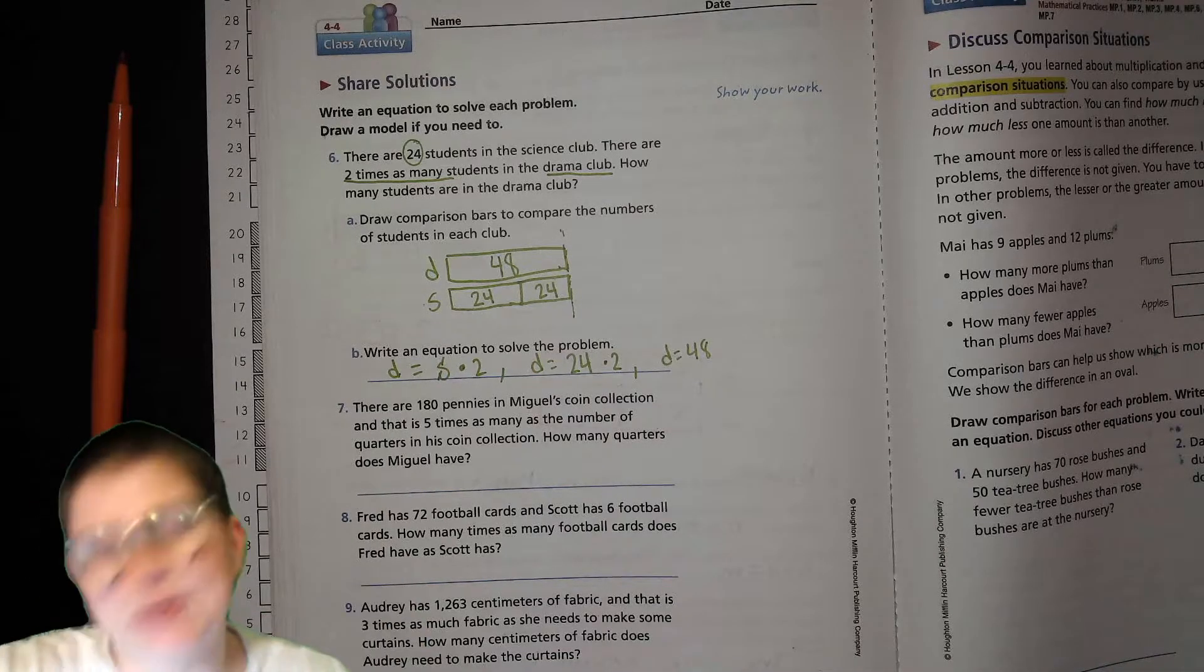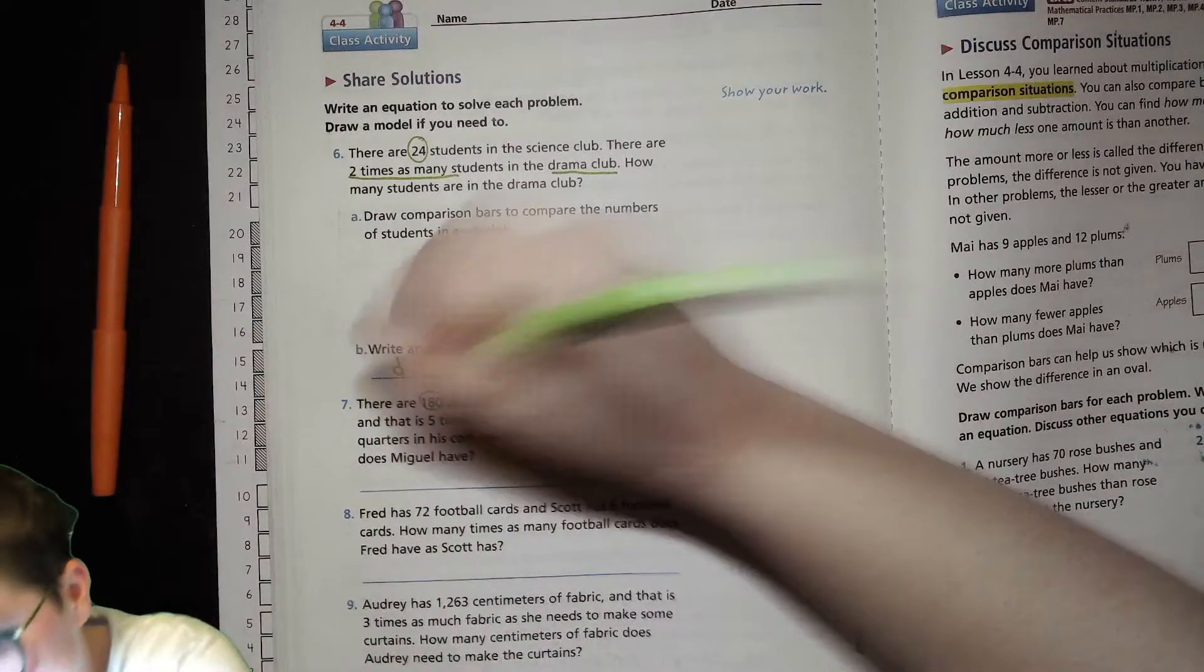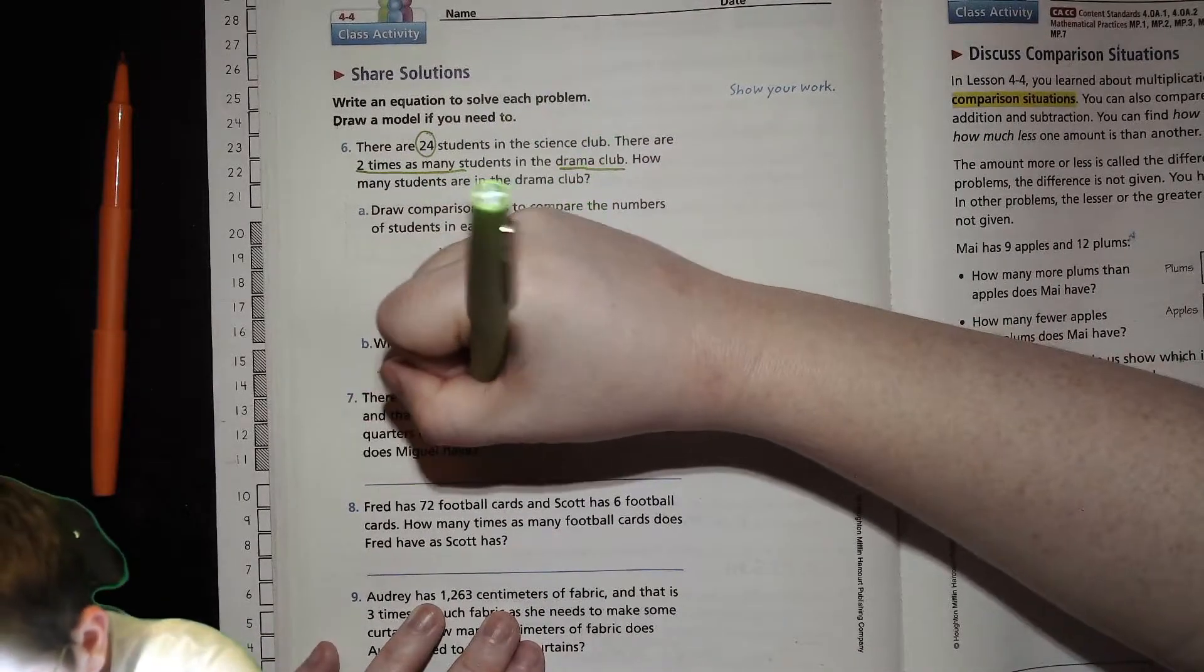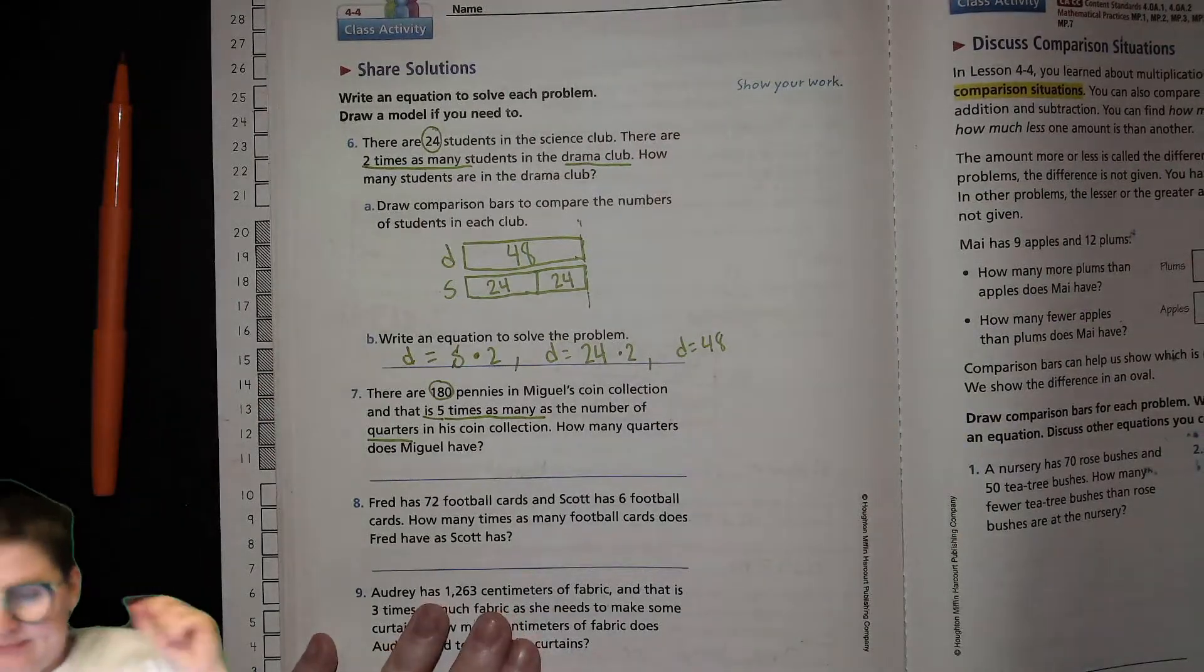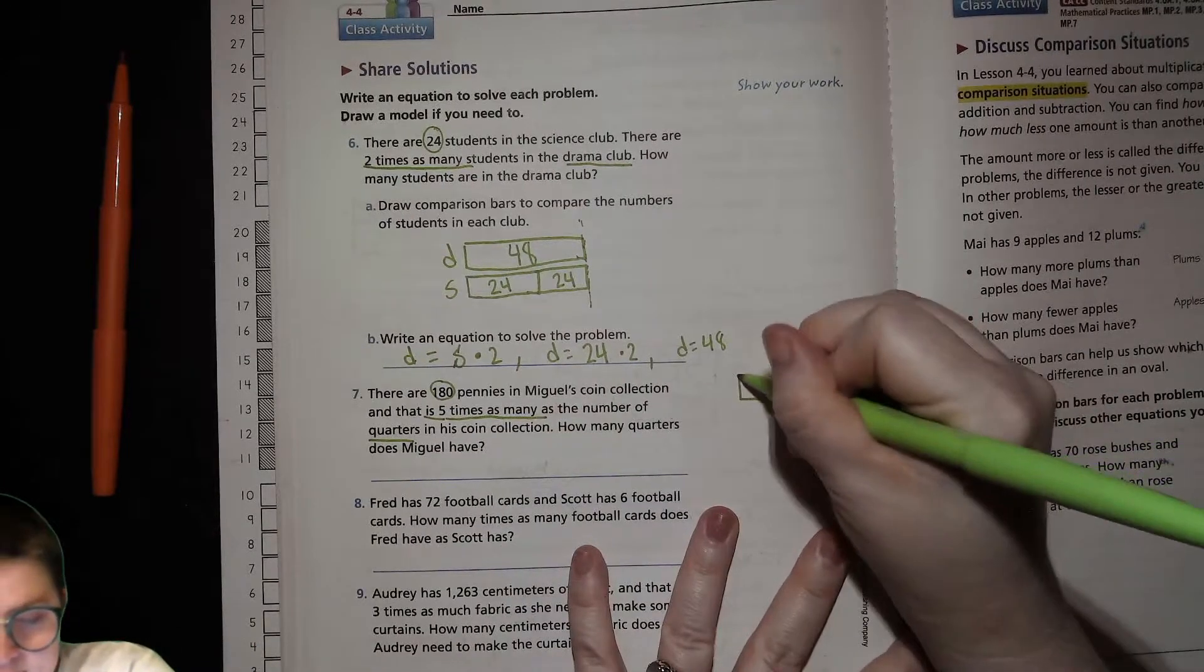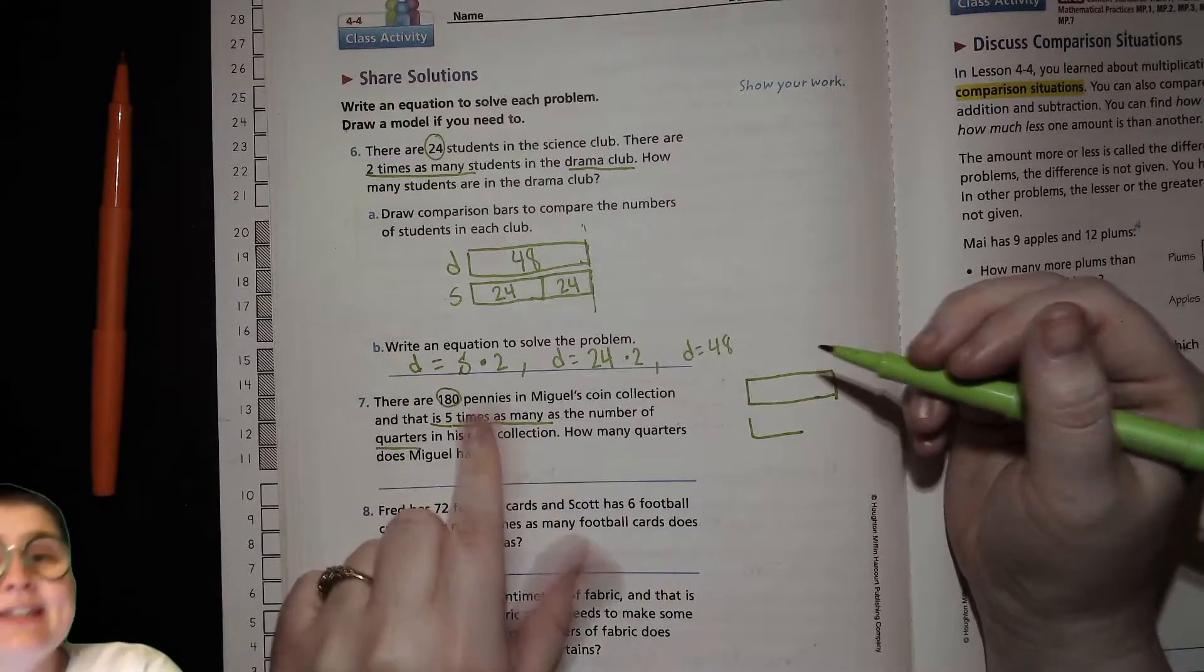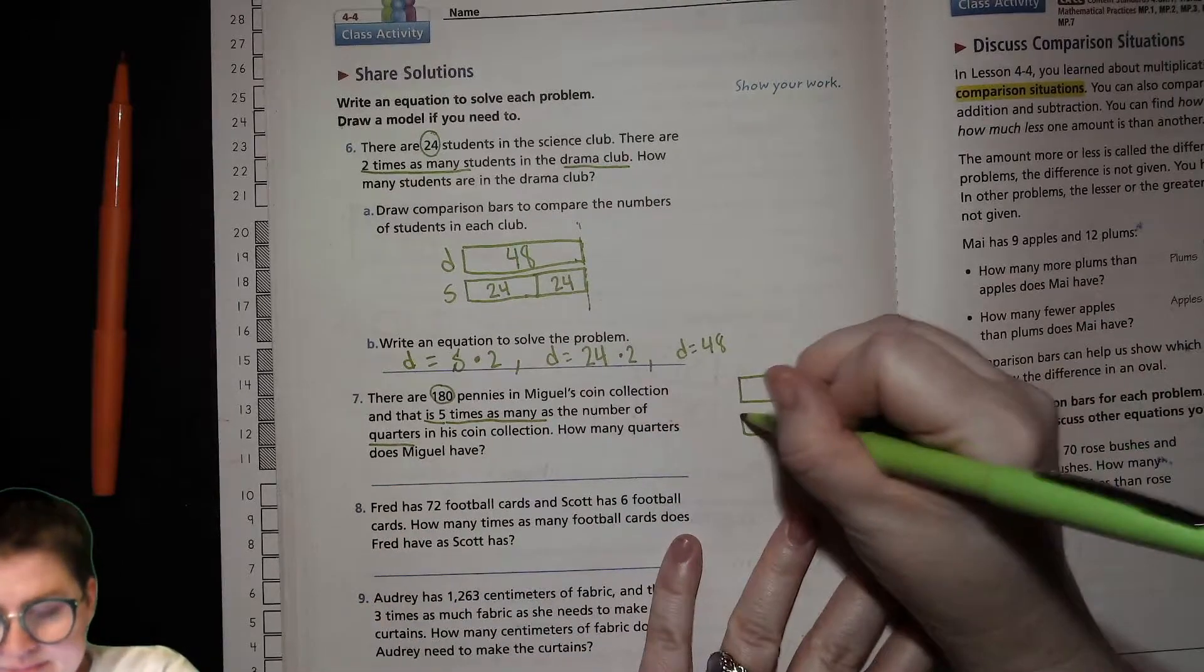Next one. If you want to give this one a shot on your own, go ahead. If you want to stay with me, that's fine. There are 180 pennies in Miguel's coin collection. And that amount, 180, is five times as many as the number of quarters. We're comparing pennies to quarters. So how many quarters does he have? So let's draw our little model here. Not quite sure how big that one is. So the pennies is the larger amount. It's five times as many as the quarters. So pennies, quarters.